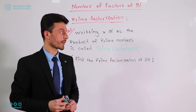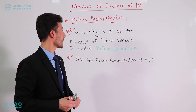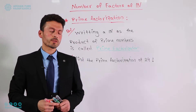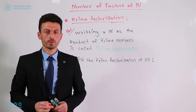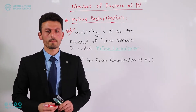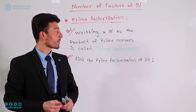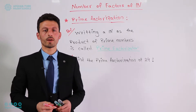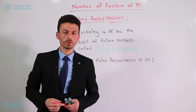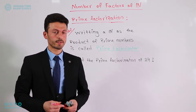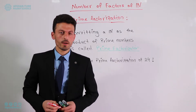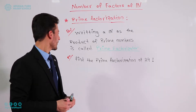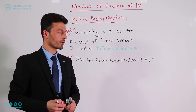The second topic we are going to study is prime factorization. Prime factorization means to find all the prime factors of a number. To find the prime factorization of a number, we have different methods. As an example, we will find the prime factorization of 24.